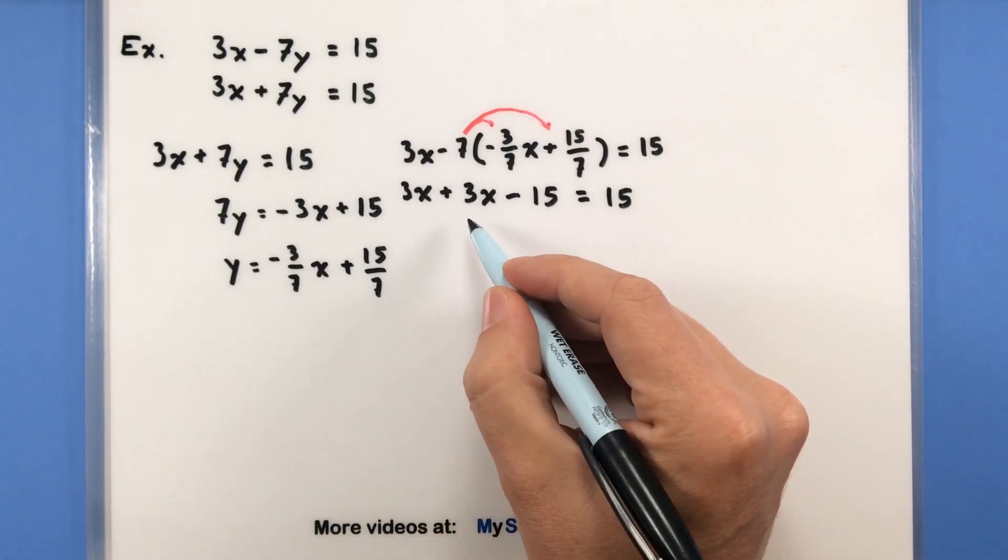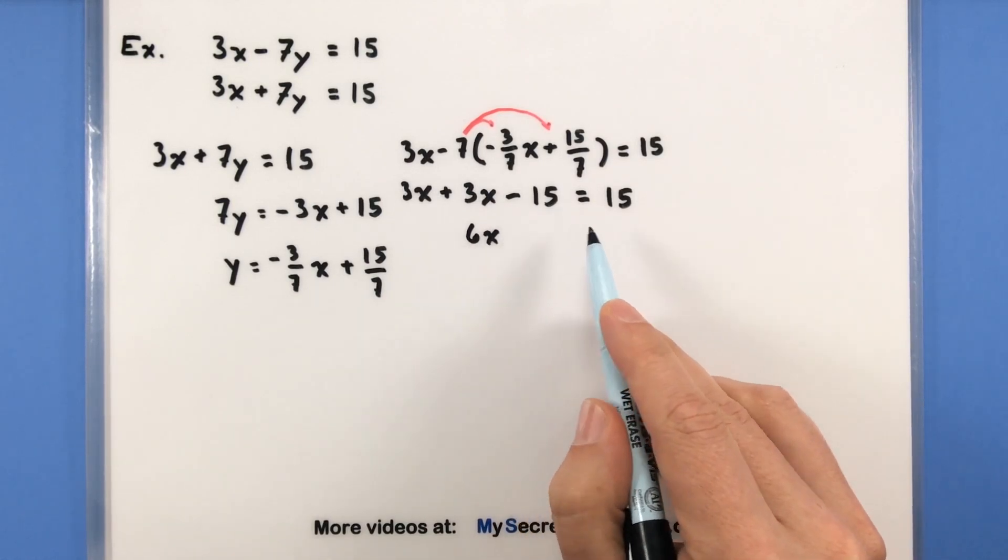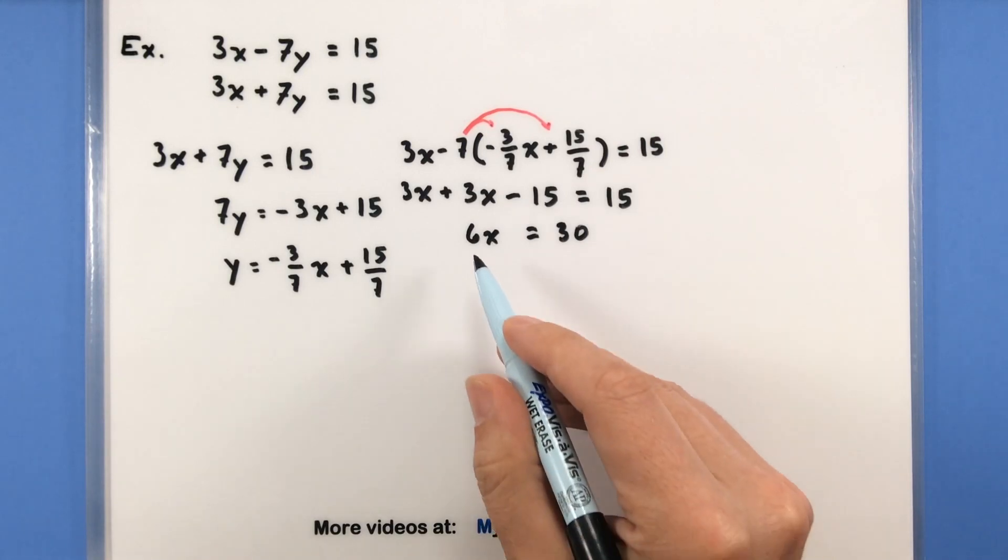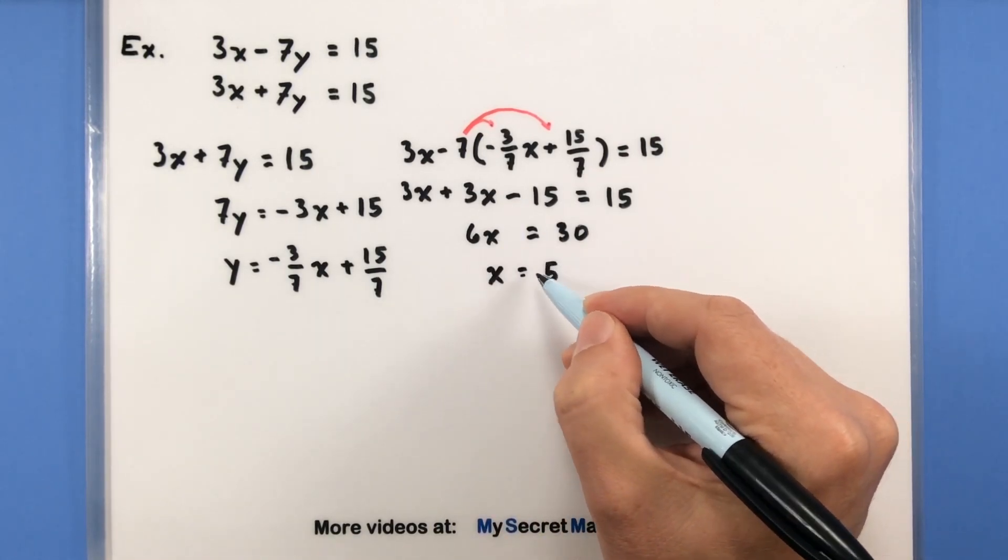Now we can combine these two x's together. 3 and 3 will give us 6x. And I can add this 15 to the other side, so this will all be equal to 30. Dividing both sides by 6, we see that x is equal to 5.